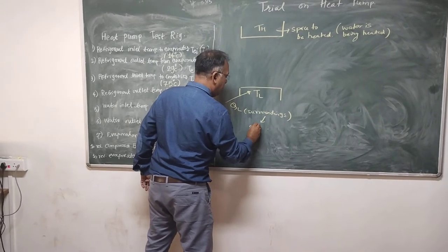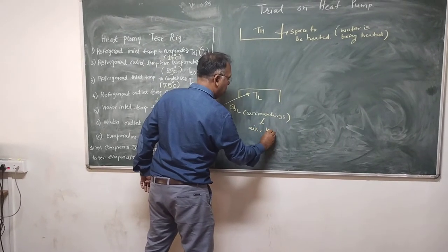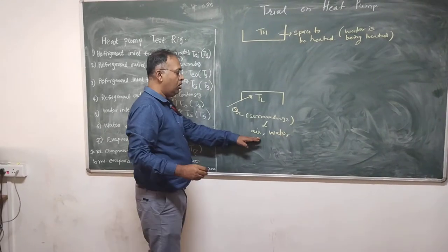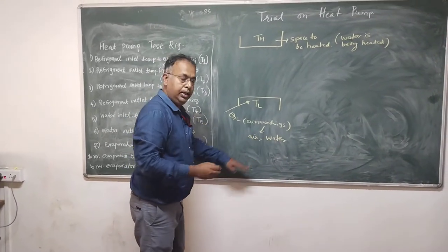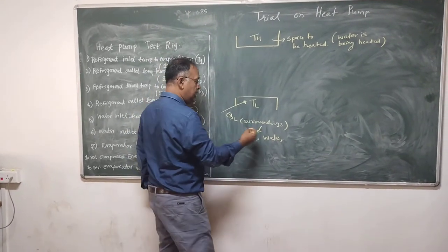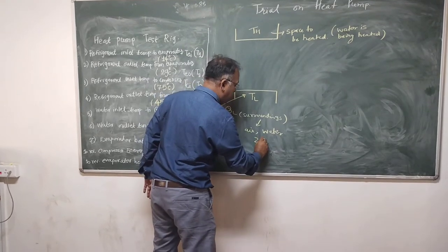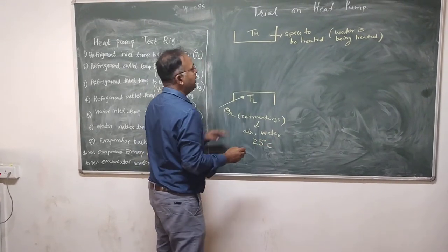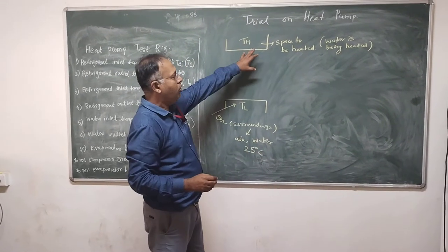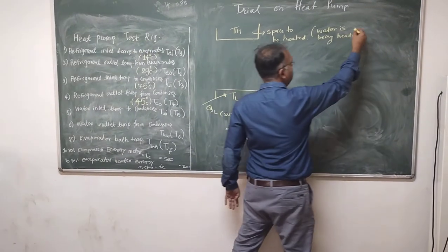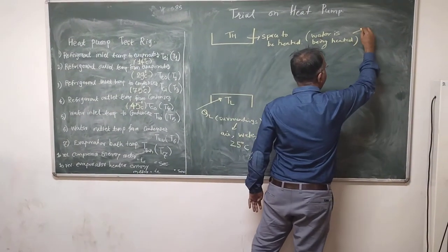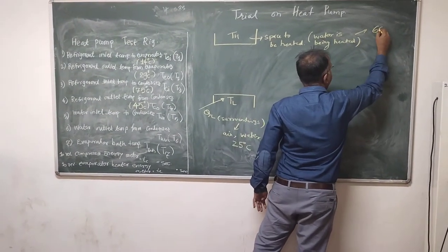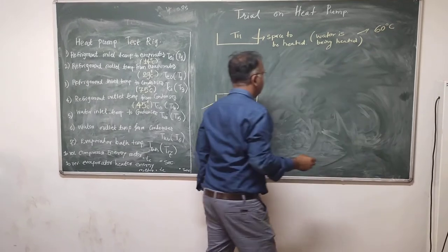The surroundings could be the surrounding air or surrounding water, but all of this — whether it is air or water — is at the ambient temperature, let us say close to 25 degrees centigrade. And let us say you want to heat the water to some higher temperature. So this is still easy to heat the water.